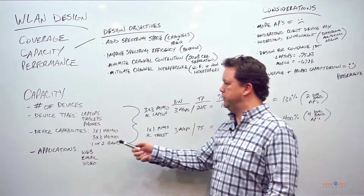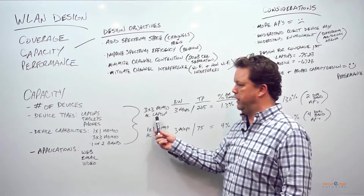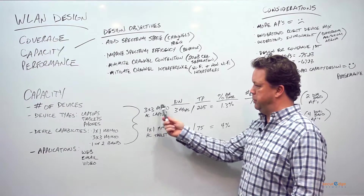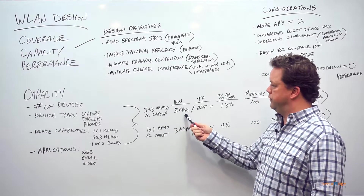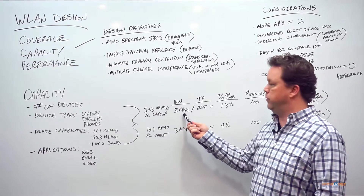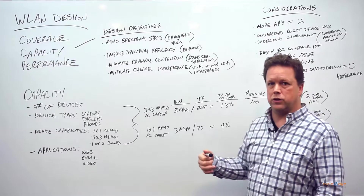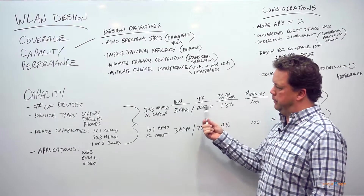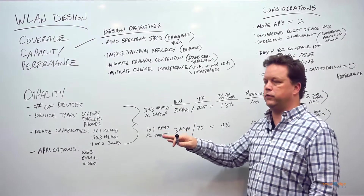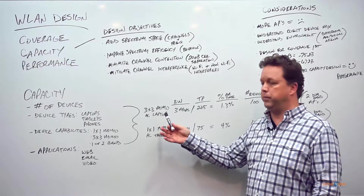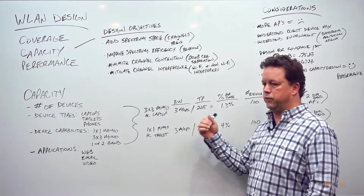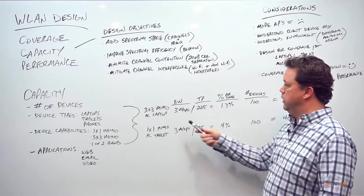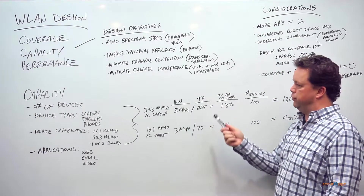Going back to device capabilities, here's an example of why that's impactful to the design. Take a high-end three-by-three, three spatial stream MIMO AC laptop. We're going to use three megabits as our requirement for bandwidth per device, because of the application the users are running. For throughput, we'll use 225 megabits — the AC laptop can do up to 450 megabits optimally, but we're never going to see that potential data rate as actual throughput because wireless is a shared medium and half duplex, so we'll only see about half of that.